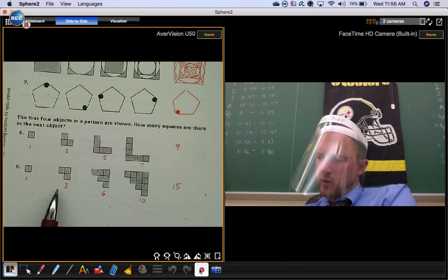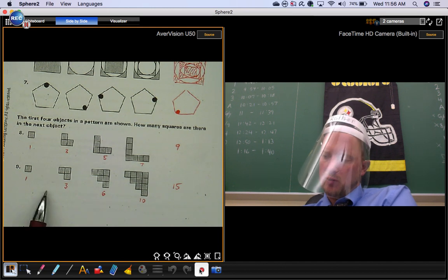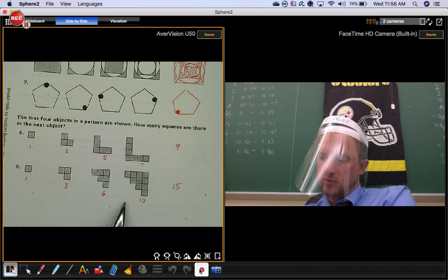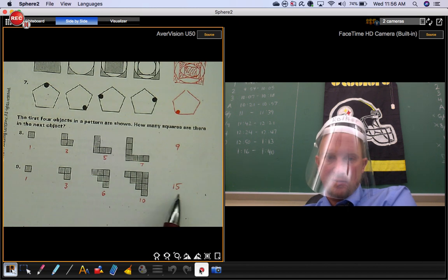Same thing here. We have one, three, six, ten. We're going up by two, then by three, then by four. So we're going to go up by five. That's why you get 15 there.